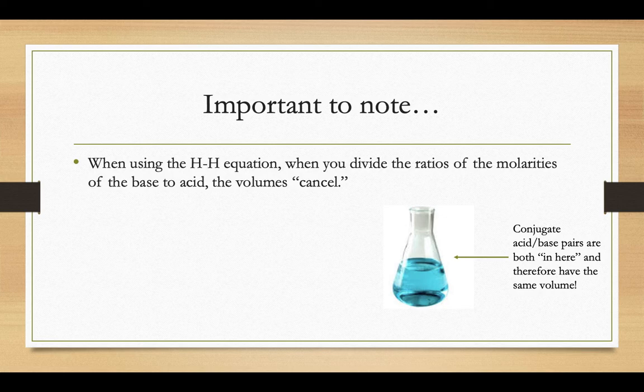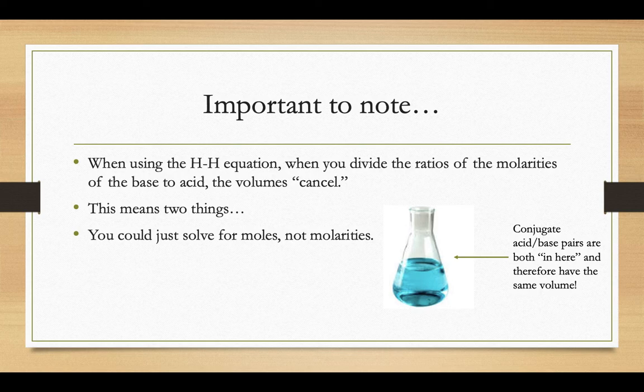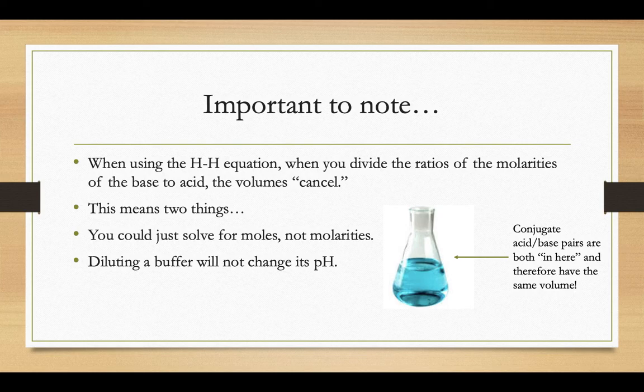If you go to plug that into your equation of A minus's molarity over HA's molarity, the volumes of the A minus and the HA are the same. So this means two things: you could just plug in moles instead of molarities into the Henderson-Hasselbalch equation, and diluting a buffer doesn't change its pH because you're changing the volume of both the weak acid and its conjugate base simultaneously. And those volumes would just end up canceling out.